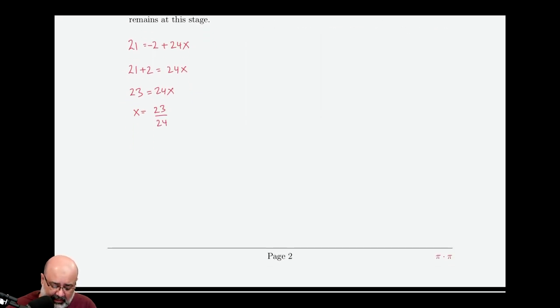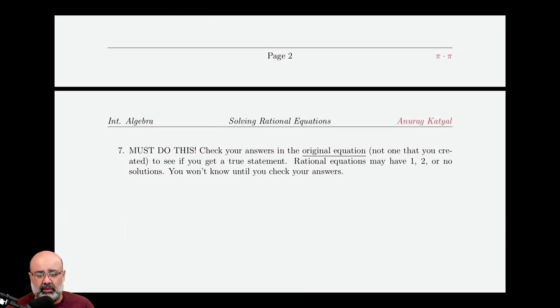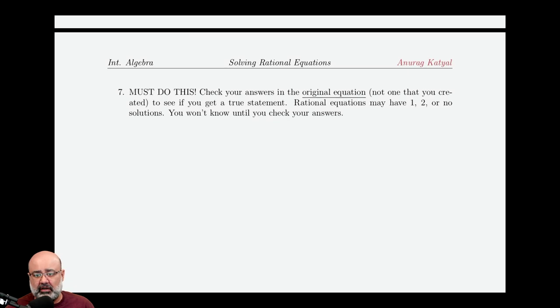Now this is a potential solution. We don't know if it's a solution or not. This is just a potential solution. How do we know if it's a solution to the equation? We check our answers or the potential solutions in the original equation. So never one that you came up with yourself after doing some manipulation.